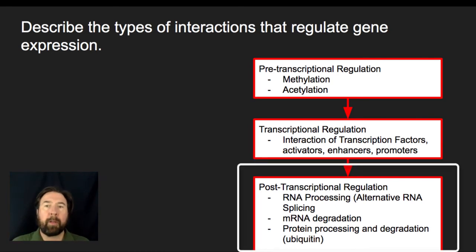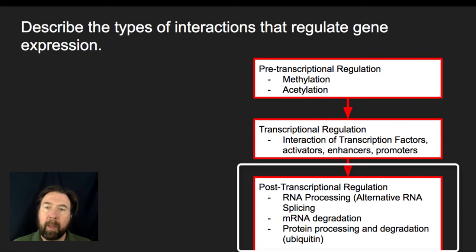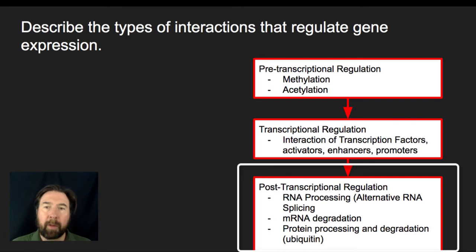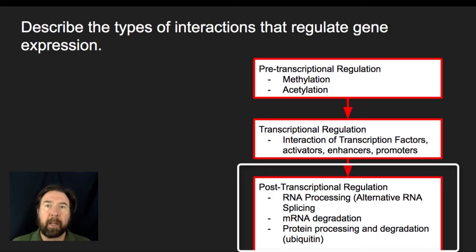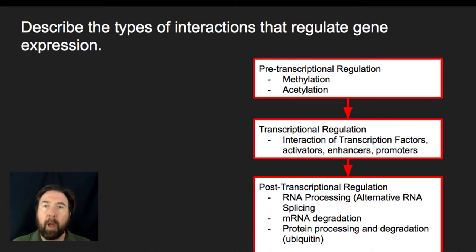And then we have a series of post-transcriptional regulations. In eukaryotes, these include RNA processing using RNA splicing — removing introns and putting together exons, and determining which specific exons are joined. There's also mRNA degradation: how long does the mRNA stick around? Does it get translated once or multiple times? And what happens with the proteins — will they undergo degradation through ubiquitin tagging, or stick around the cell for a very long time? All of these impact how genes are expressed and how impactful they will be on the life of the cell or organism.